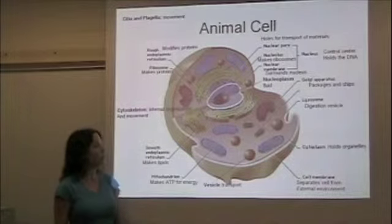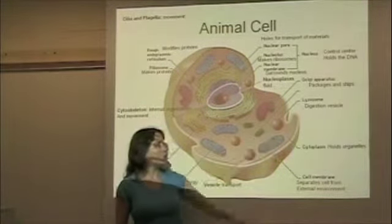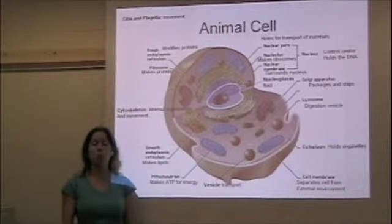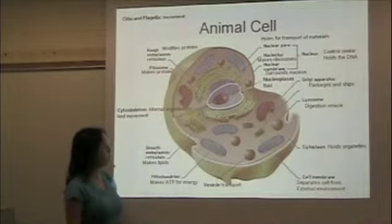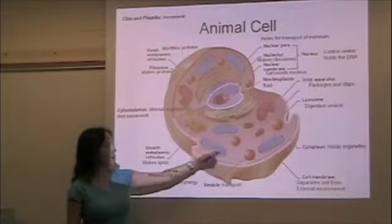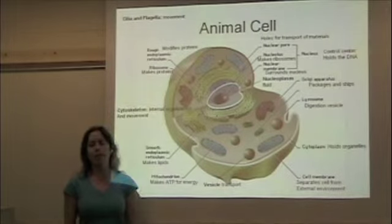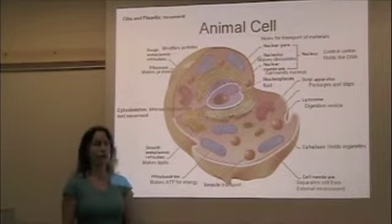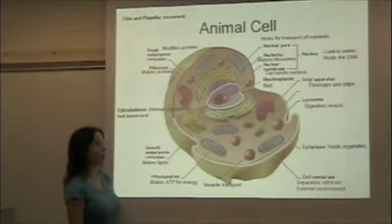There are some specialized vesicles called lysosomes, which are used for digestion — they have enzymes in them that break down larger molecules. Another really important structure is the mitochondria. The purpose of the mitochondria is to make ATP, which is the energy currency of the cell. Without the mitochondria, the cell could not survive.